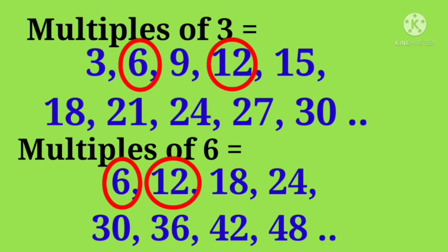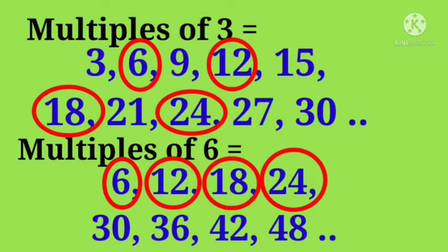Now the common multiples are 6, 12, 18, 24, then 30 and so on between the multiples of 3 and 6.